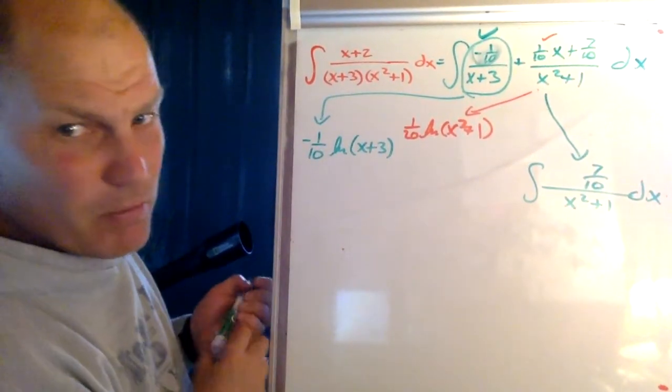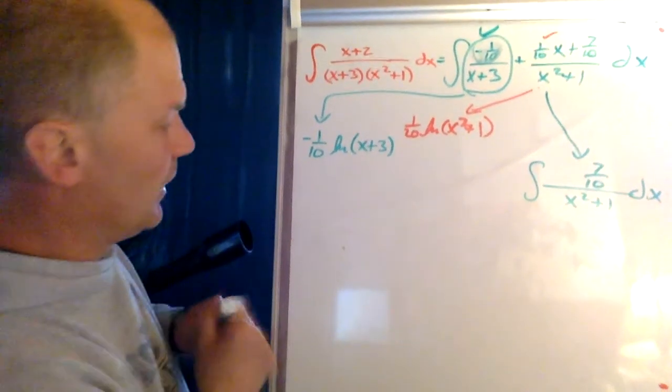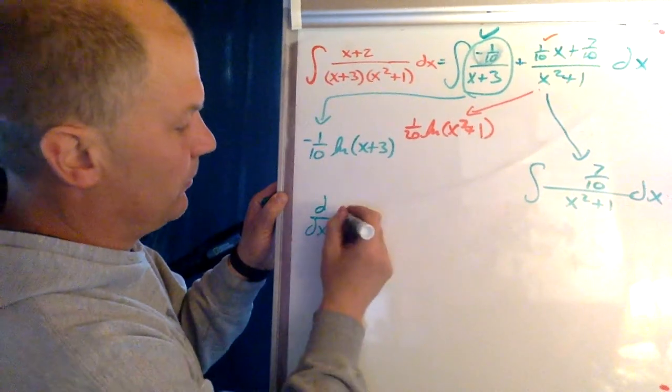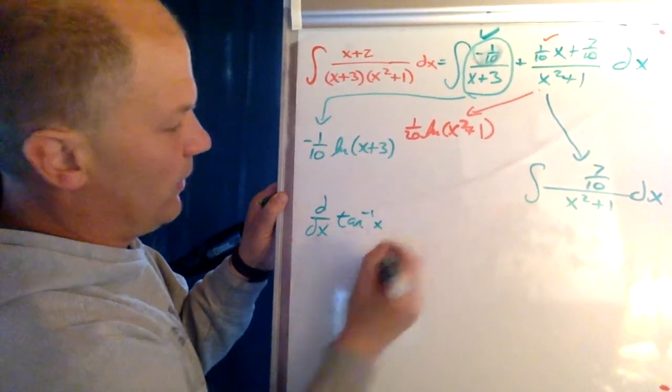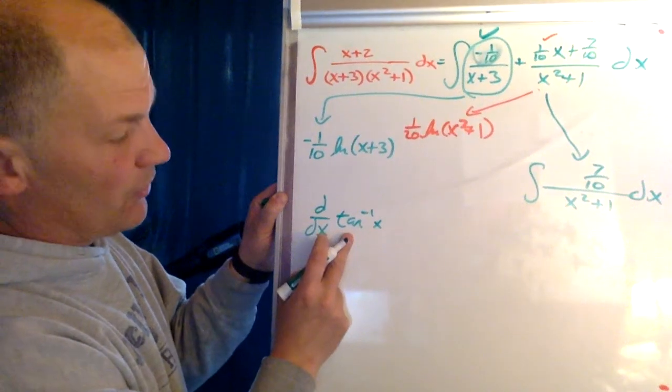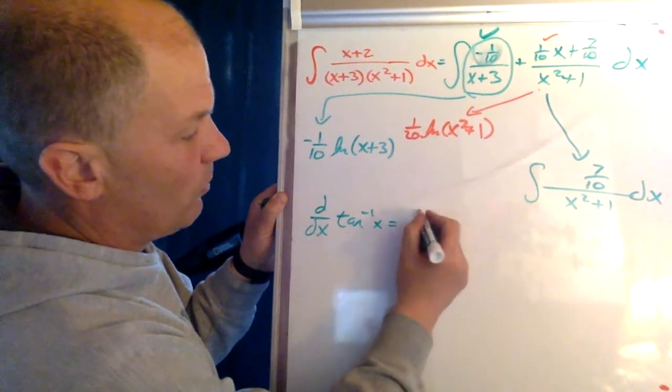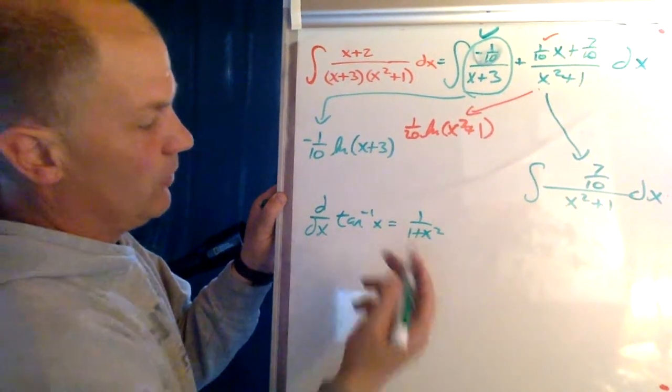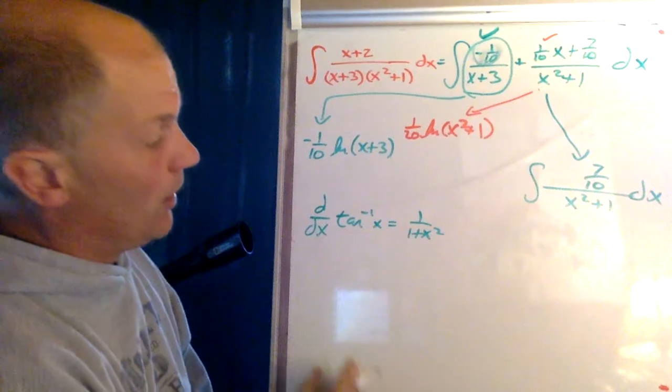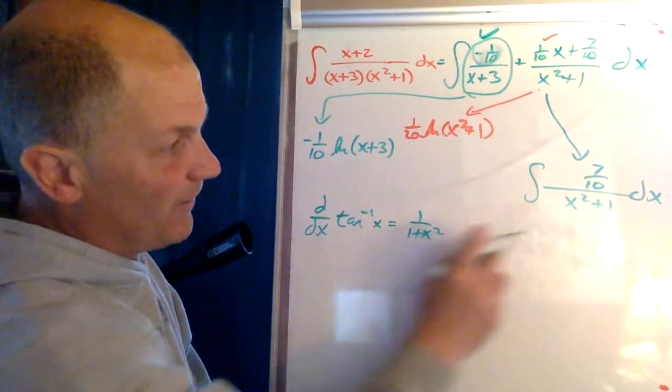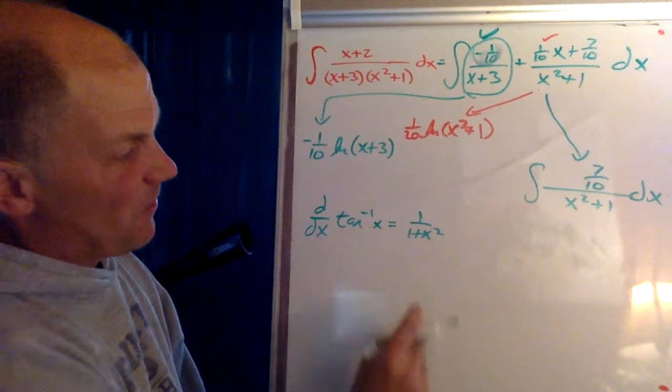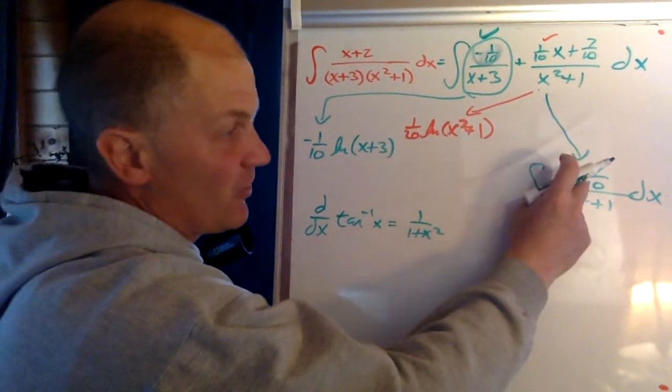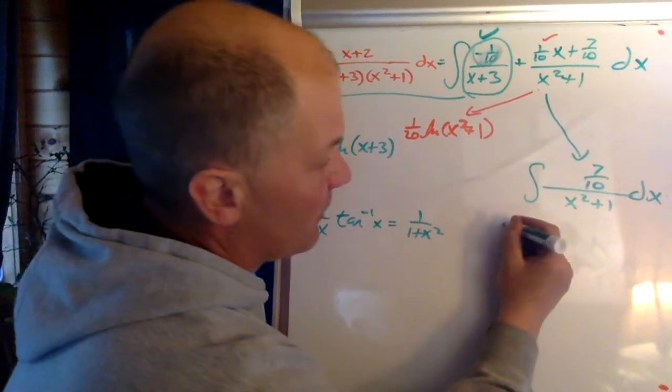You may or may not remember this fact. At some point we've talked about that the derivative of inverse tangent of x is one over one plus x squared times du dx for the chain. So that's right there. The derivative of this must be this. This is just a constant, so we can move that constant outside.